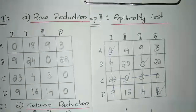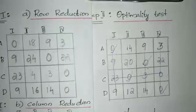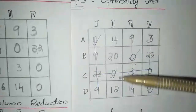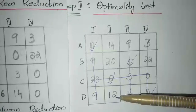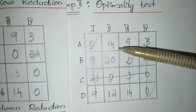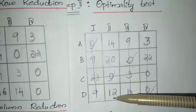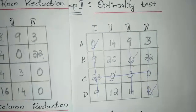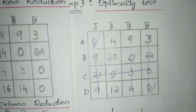Also, take the minimum undeleted value (12) and subtract it from all other undeleted values. So: 14−12=2, 20−12=8, 12−12=0. The matrix is updated accordingly for the next iteration.